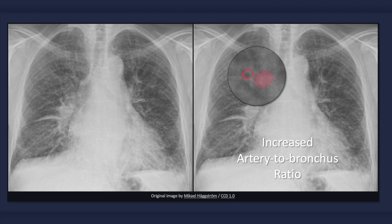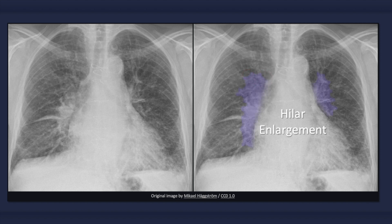Normally, the upper lobe artery-to-bronchus ratio is less than 1 to 1. Here, the reverse is seen with a larger artery than bronchus. The bronchus is the ring-like structure with a hollow center while the artery is filled in. You may also notice the prominence of the hilar region and the widening of the vascular pedicle. The fullness of the right hilum is particularly evident, whereas the left hilum is predominantly obscured by an enlarged cardiac silhouette. Unlike lymph node enlargement, the hilar region in this x-ray has irregular borders due to thickened outward branching vessels.